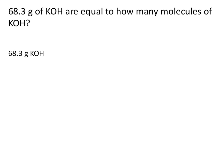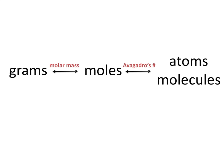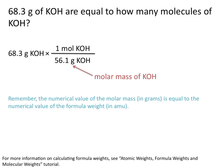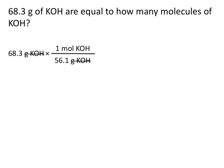Let's try a slightly more complicated example. 68.3 grams of potassium hydroxide are equal to how many molecules of potassium hydroxide? We start with 68.3 grams of potassium hydroxide, and we know that we can't go directly from grams to molecules. So our first step needs to be to convert from grams of potassium hydroxide to moles of potassium hydroxide using the molar mass. So 1 mole of potassium hydroxide is equal to 56.1 grams of potassium hydroxide. Remember, the numerical value of the molar mass in grams is equal to the numerical value of the formula weight in AMU, so if you know how to calculate formula weights for compounds, you know how to calculate the molar masses of compounds. By putting grams of potassium hydroxide on the bottom, this allows us to cancel out grams of potassium hydroxide.